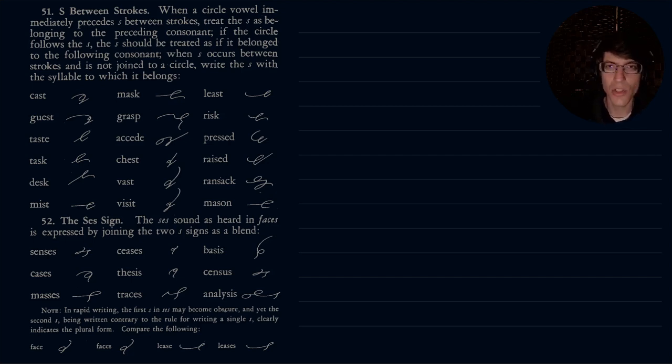Here we continue with our studies through Greg Shorthand. Today we continue or actually we are finishing up our section on the S strokes. S is one of those sounds that is very prevalent in the English language, and so there are a good many ways that S can be used. We will be working on sections 51 through 55 today.